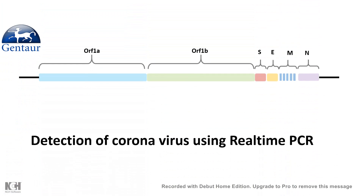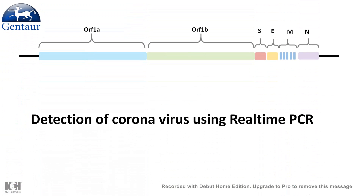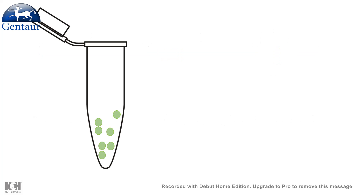The unique signatures present in these sequences can be detected using a sophisticated technique known as real-time PCR. Let us see how real-time PCR works. Real-time PCR works based on SYBR Green chemistry.